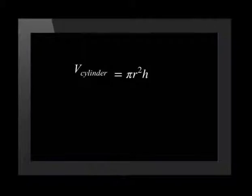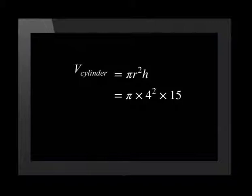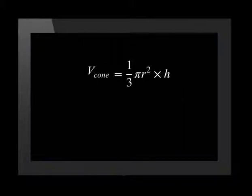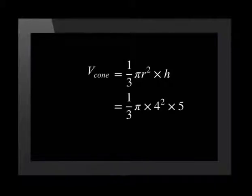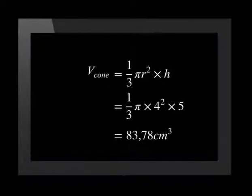Now let's calculate the volume of the cylinder. The volume of a cylinder is calculated by multiplying pi r squared by the height of the cylinder. This is equal to pi times 4 squared times 15 centimeters, and the answer is 753.98 centimeters cubed. Finally, the volume of a cone is calculated by using the formula of one-third times pi r squared times the height of the cone. Substituting in the given values, this gives us one-third times pi times 4 squared times 5 centimeters. That works out to be 83.78 centimeters cubed.